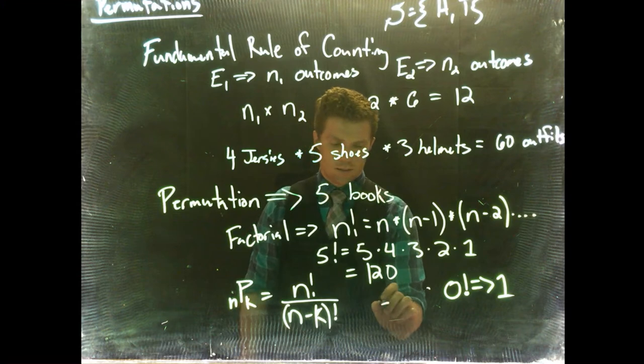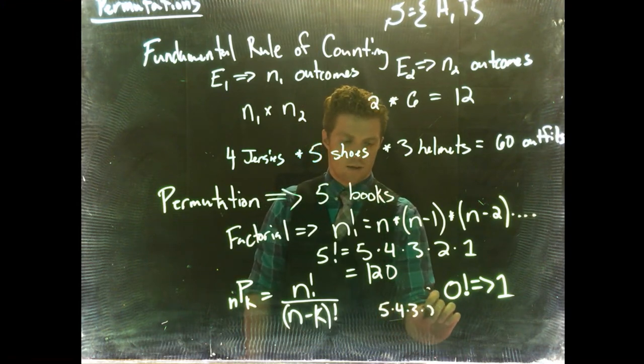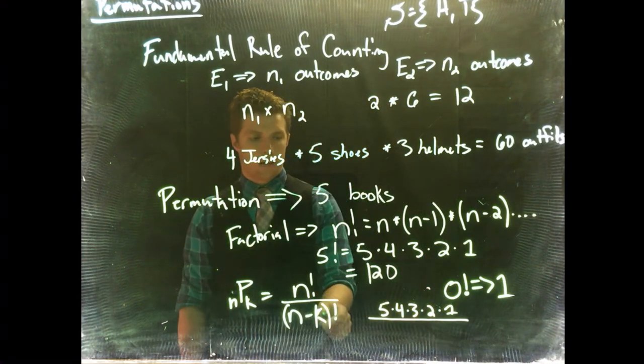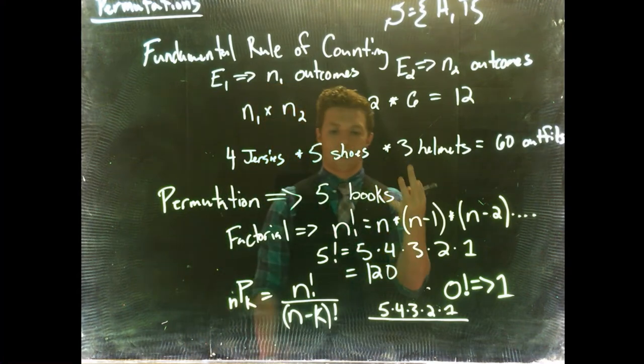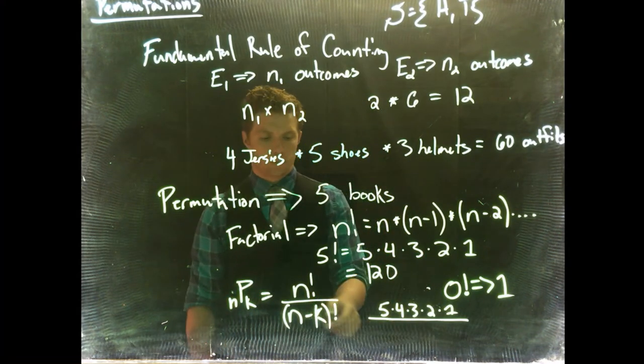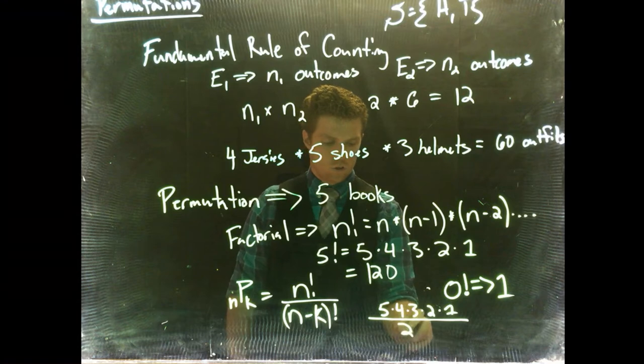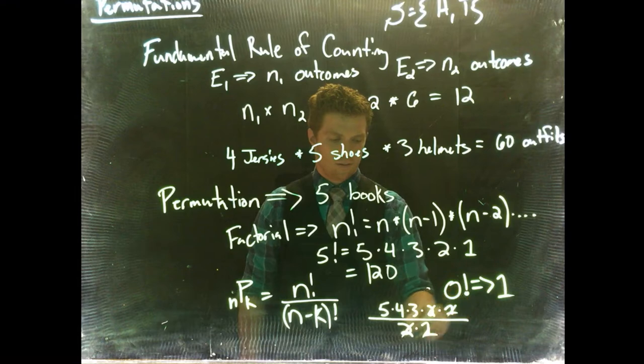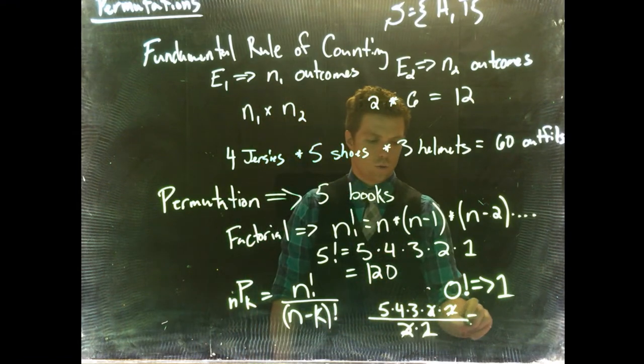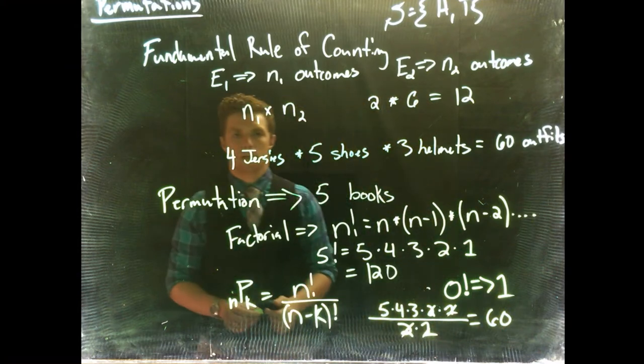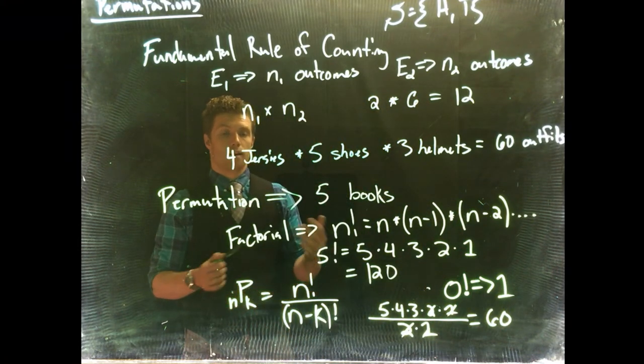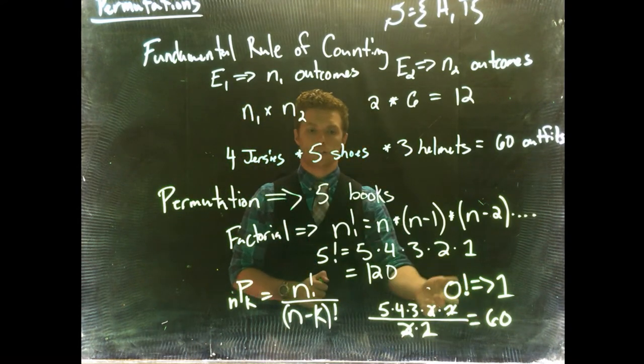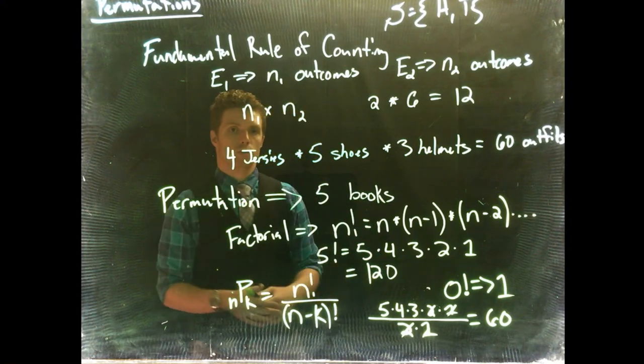So we'd have five factorial. So that's five times four times three times two times one, divided by N minus K. So we've got five books. I said we could take three at a time. So five minus three is two. So we'd have two factorial, two times one. And we can just kick these off. And then we're left with a total of 60 outcomes. So if we have a lot of books, but a limited amount of space, the number of outcomes that we actually can do is diminished. And we can do this with lots of other examples as well.